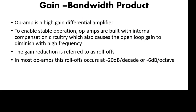Now, why does this distortion occur? An operational amplifier is a high-gain differential amplifier with gain around 10⁵ to 10⁶. This high gain leads to instability, so to enable stable operation, operational amplifiers are built with internal compensation circuitry. This internal compensation circuitry causes the open-loop gain to diminish at high frequencies — that is, the gain decreases with increasing frequency.